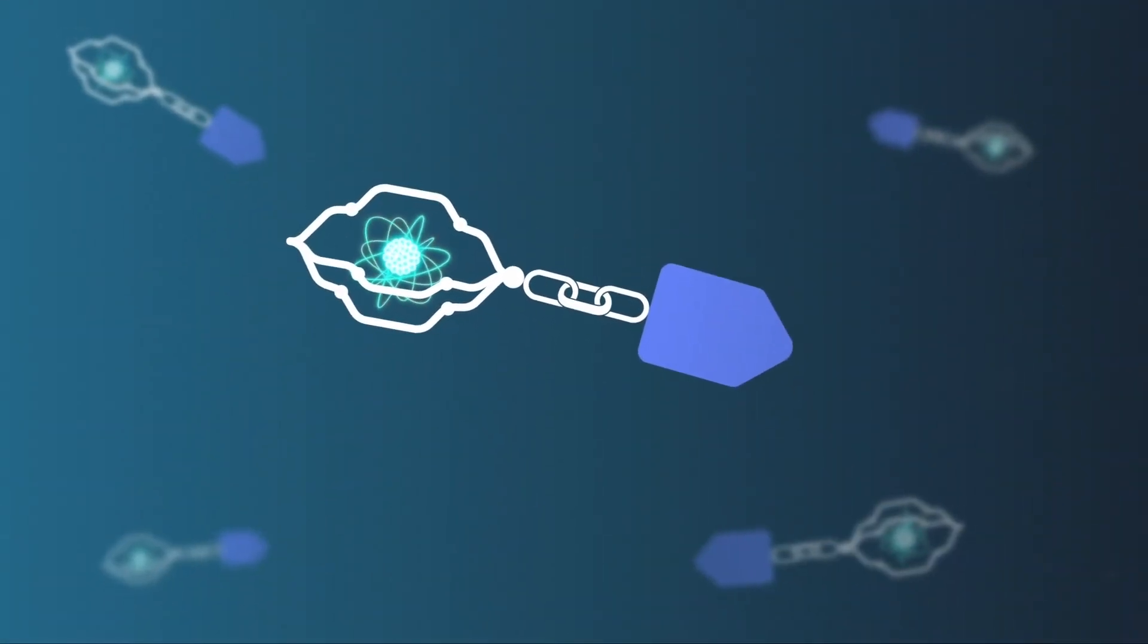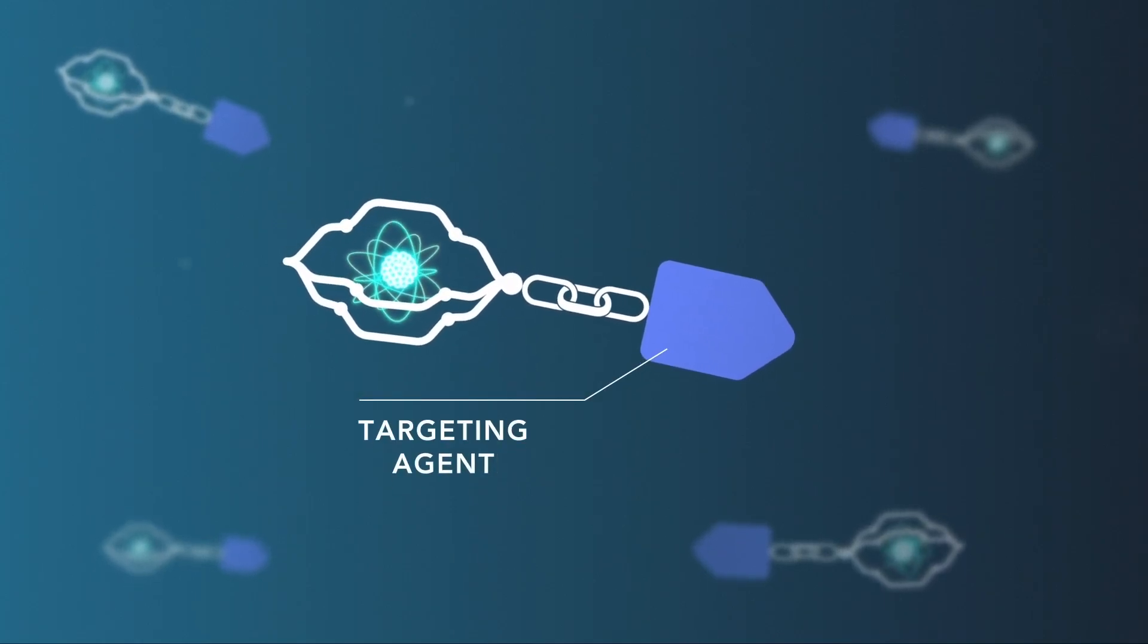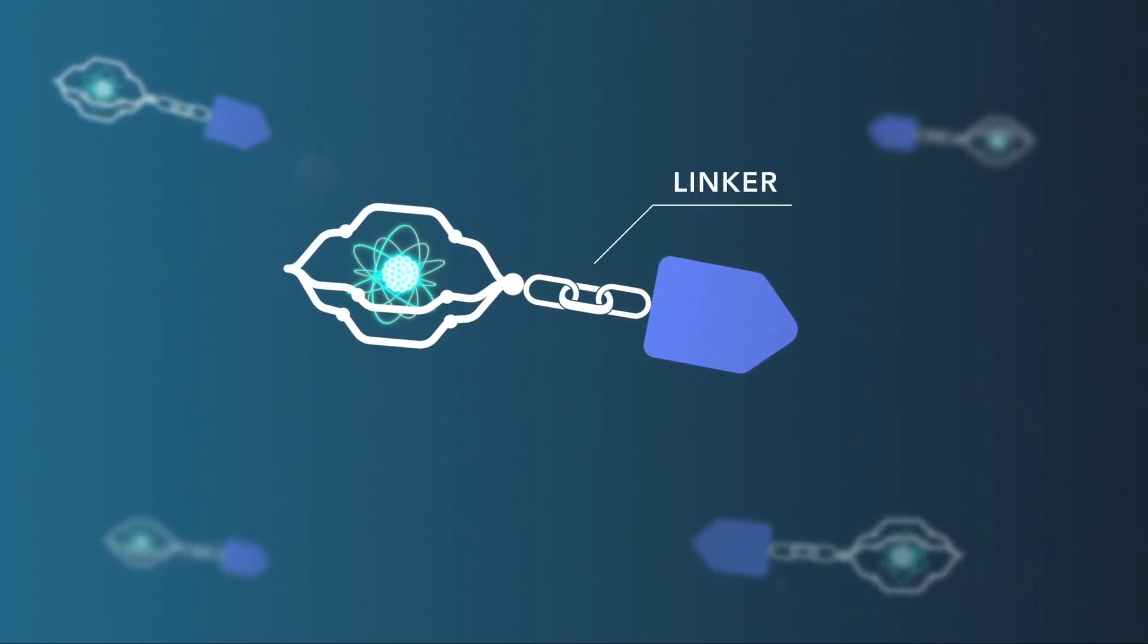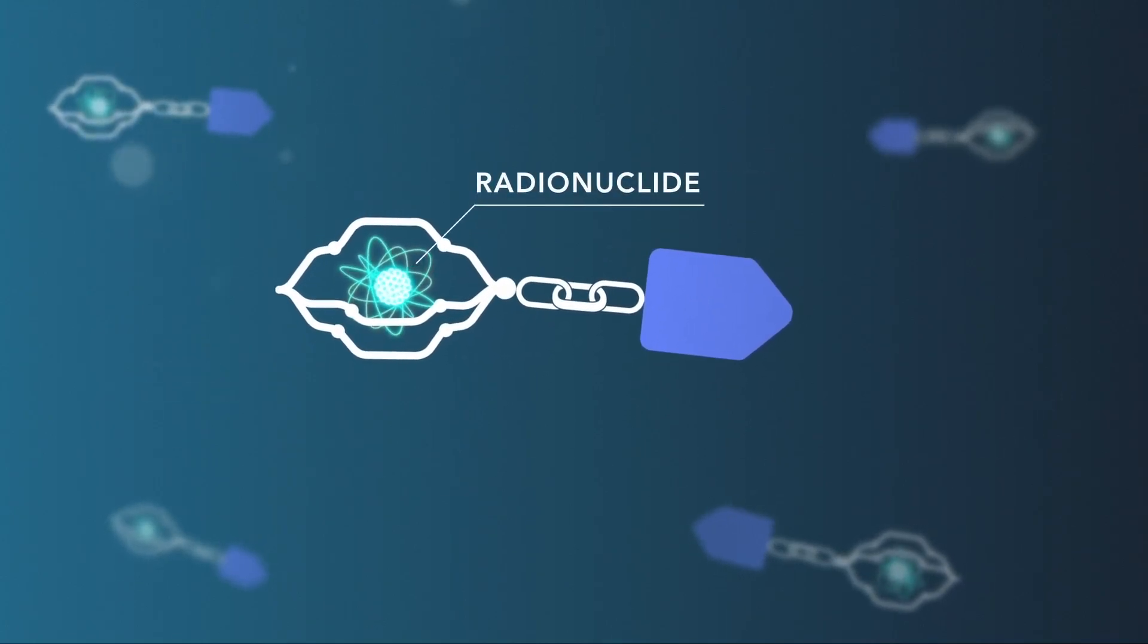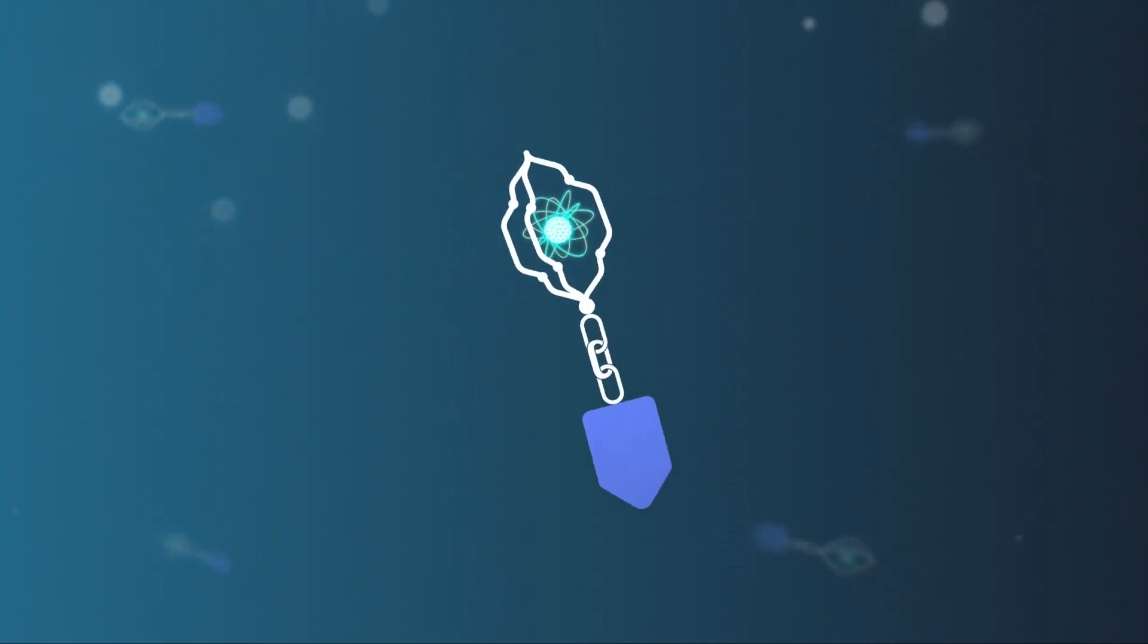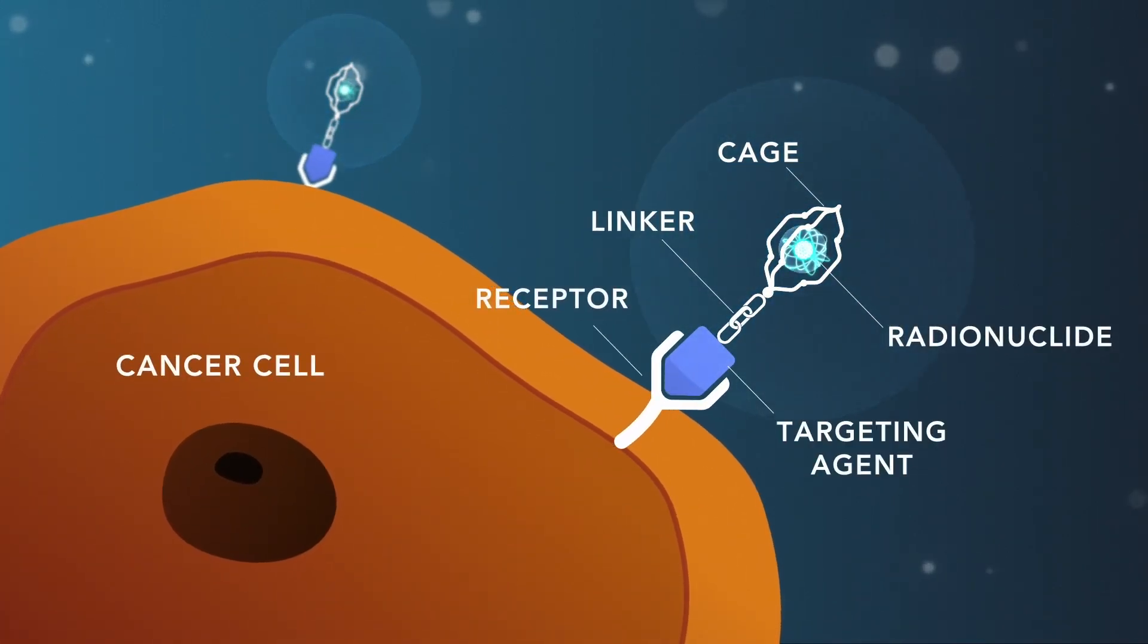Therapeutic radiopharmaceuticals typically consist of a targeting agent that seeks out and binds to cancer cells and a linker that connects the targeting agent to a cage or chelator which holds a radioactive payload. This payload is a powerful radionuclide that emits cancer-killing radiation.